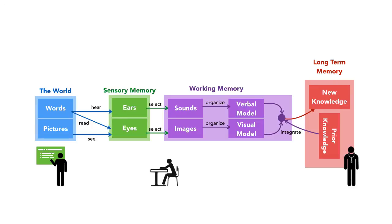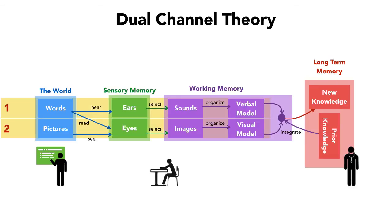Let's look at those three aspects we talked about before. The dual-channel theory — in most instruction, we don't utilize all of our senses, but we focus mostly on visual and auditory. All of our information is going to flow through those two channels throughout the processing of the information. We see pictures and read the words on the slides, and it goes all the way through the visual channel. We hear the words that they tell us, and that goes through our verbal channel. It's not until the end that we integrate the two, along with prior information, into new knowledge.